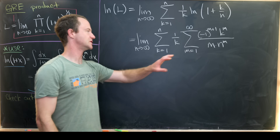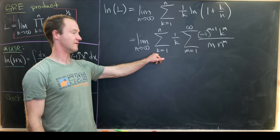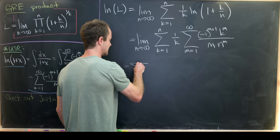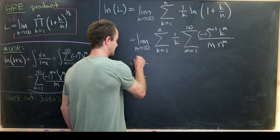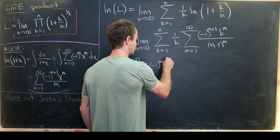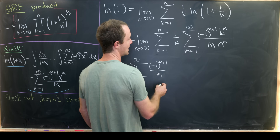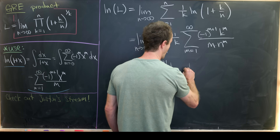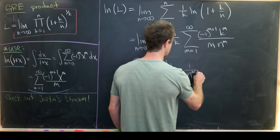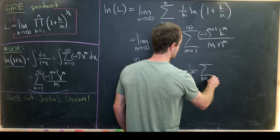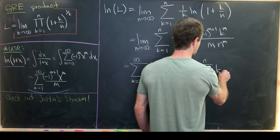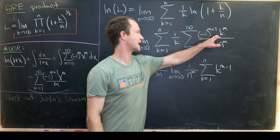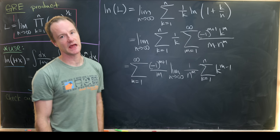We bring the sum as m goes from 1 to infinity outside of the k-sum and the limit. That gives us the sum as m goes from 1 to infinity of (−1)^(m+1) / m, times the limit as n goes to infinity of (1/n^m) times the sum as k goes from 1 to n of k^(m−1). It's k^(m−1) because we have m k's from the expansion and one k in the denominator.